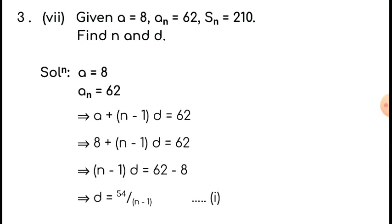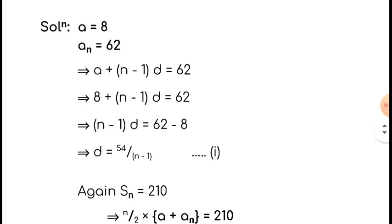The first term a equals 8. Using the nth term formula: a plus (n minus 1)d equals 62. Substituting a equals 8: 8 plus (n minus 1)d equals 62, so (n minus 1)d equals 54, giving d equals 54 divided by (n minus 1). Call this equation number 1.